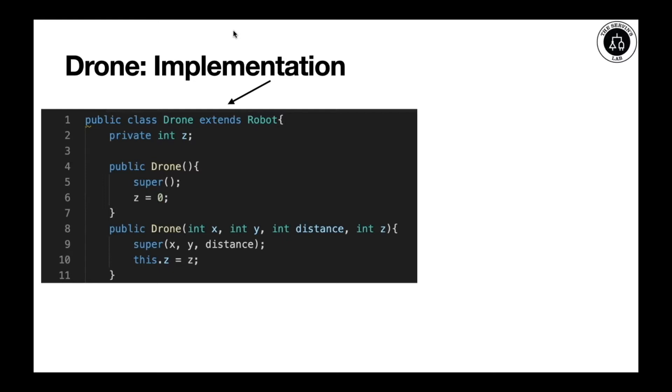Notice that we have a field on line 2 called Z, which will represent the actual attribute that makes this class drone unique. But what happened to X and Y? Those are attributes that come from robot and we will inherit, thanks to the word extends.